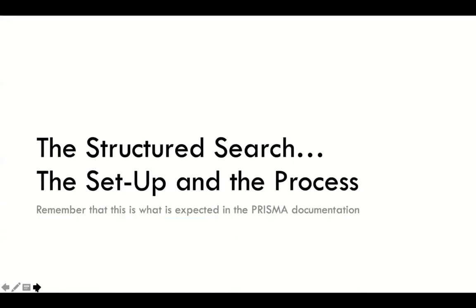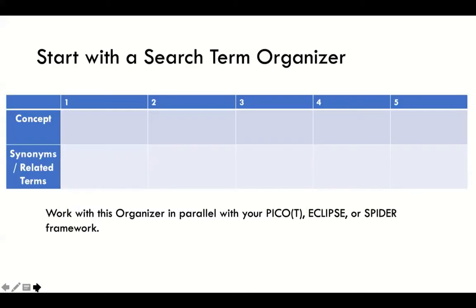Now let's review the structured search and the setup process. We foreshadowed the structured search by showing you the three-chunk structure. Remember the organizers from yesterday — our PICO, Eclipse, Spider, and all of those? Those are great for narrowing down your research question and really getting into your protocol. Now for today, we want a very simple search organizer that focuses on concepts you were able to highlight with your PICO or other organizer.